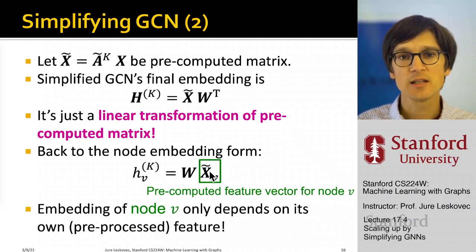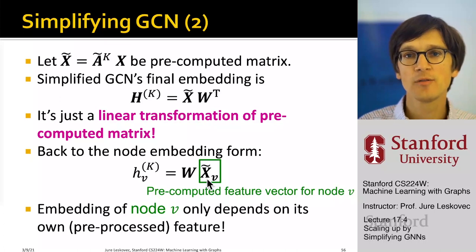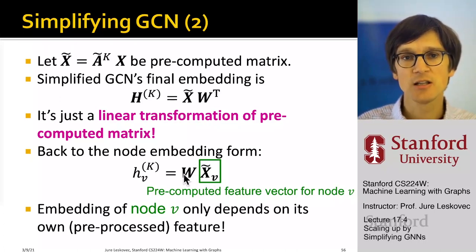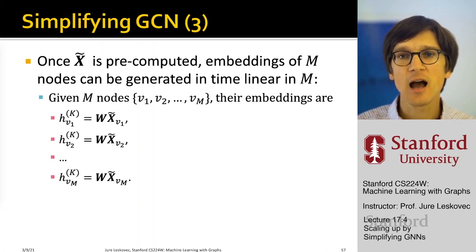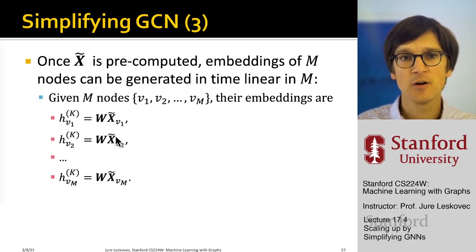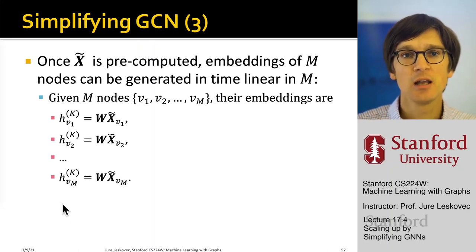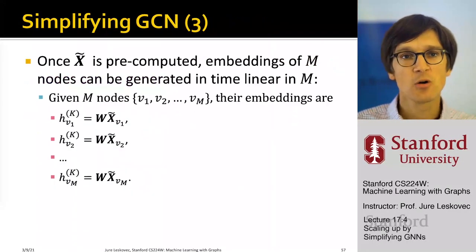Once X-tilde has been computed, the embedding of a given node only depends on a given row of X-tilde that is fixed and constant. The only thing that changes and is learnable is W. This means that embeddings of M nodes can be generated in time linear in M, because for a given node, its final embedding only depends on its own row in the matrix X-tilde. So I can easily sample a mini-batch of nodes — I sample a set of rows from the matrix X-tilde, then multiply with W to get the final layer embeddings of those nodes in the mini-batch.